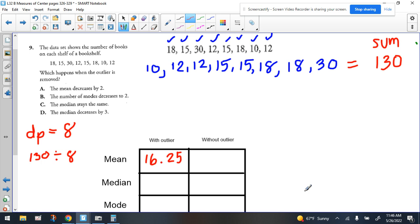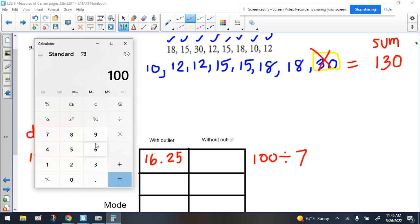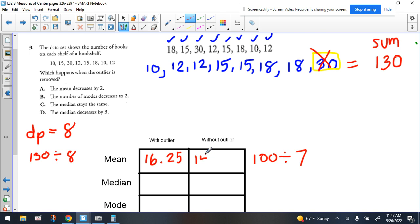All right, now if we take the outlier out, the outlier we're saying is 30. If we subtract 30 from this sum, then it would be 100. The sum would be 100, and we wouldn't be dividing by eight because then we would have seven values if we take this out. So imagine that that's gone, and if we do 100 divided by seven, 100 divide that by seven, we get this number. So let's round that to the nearest hundredth. 14 and let's say 29 hundredths. 14 and 29 hundredths.